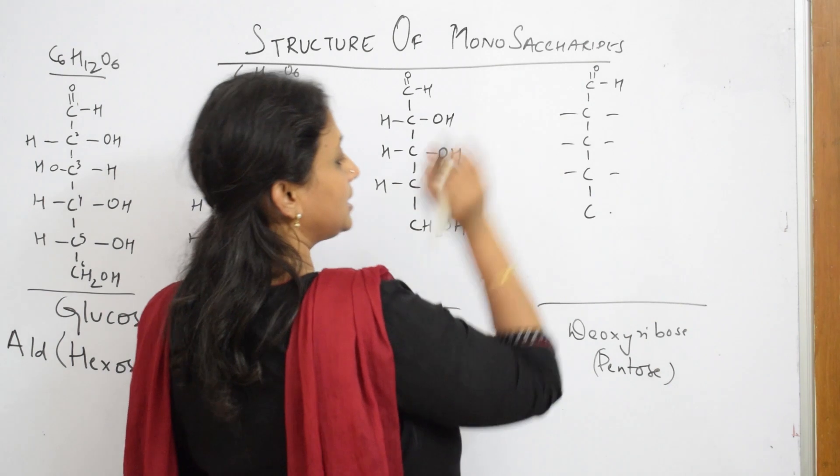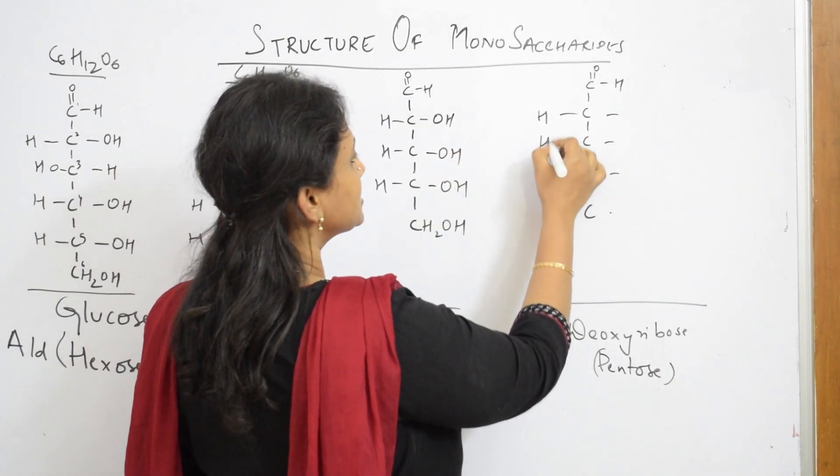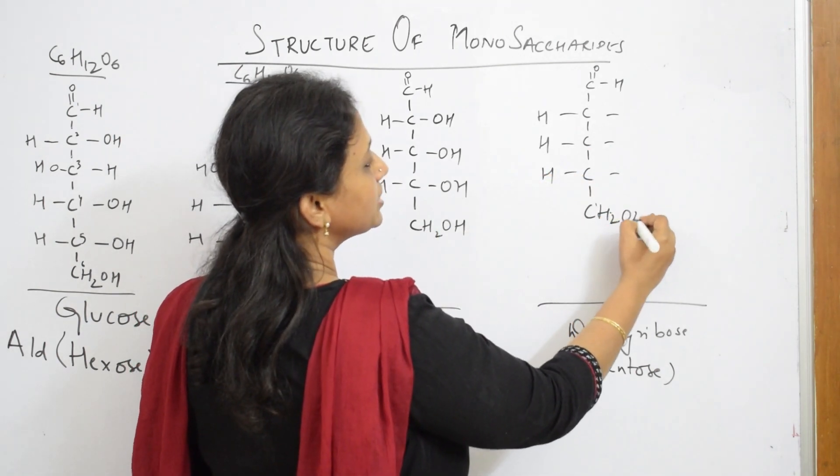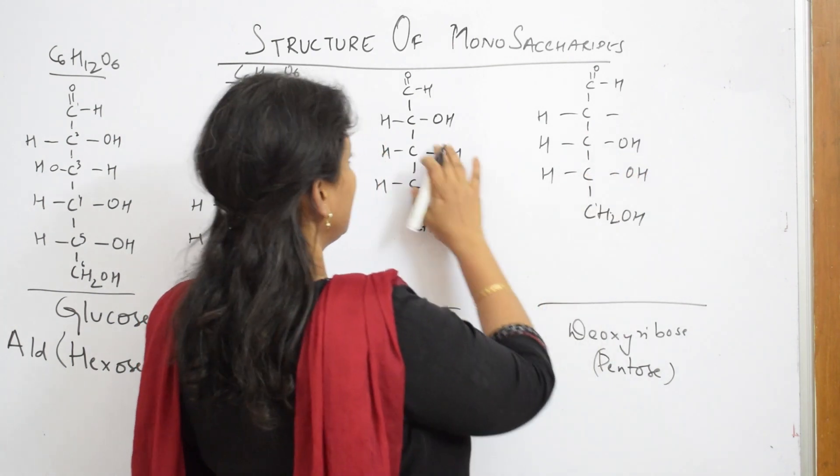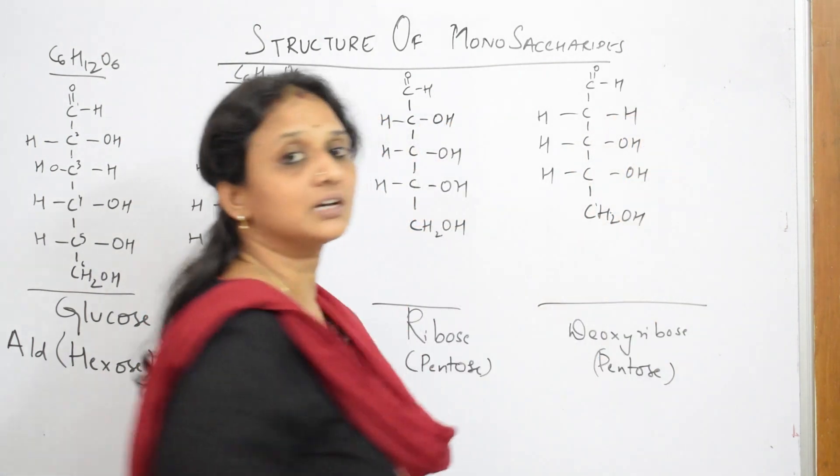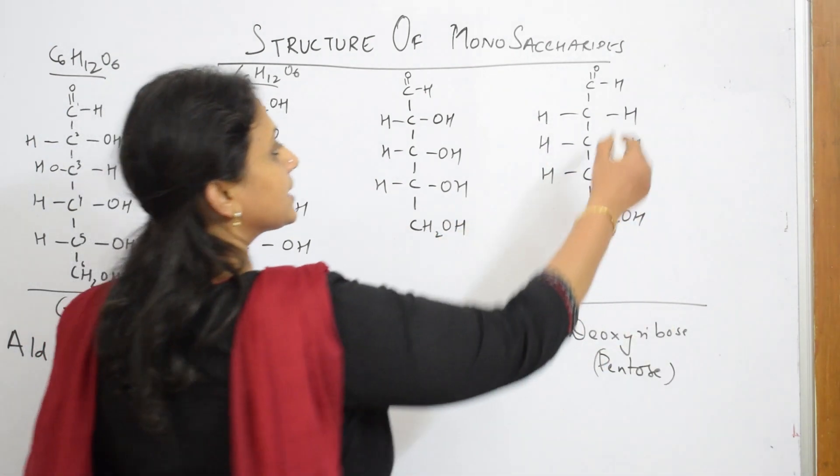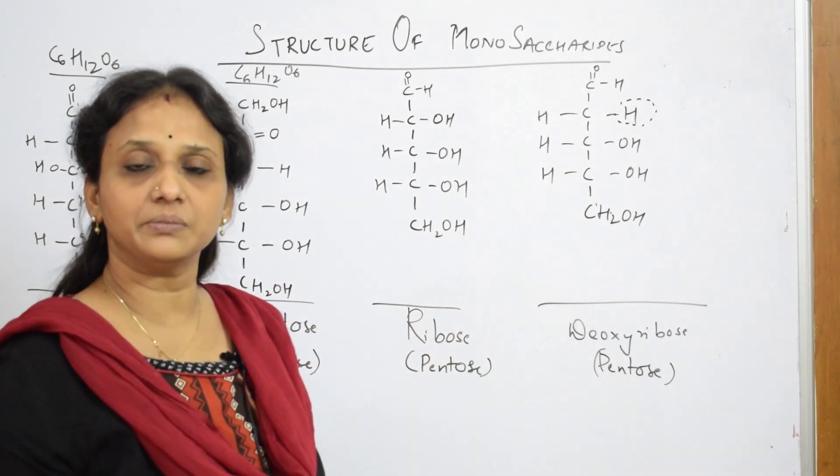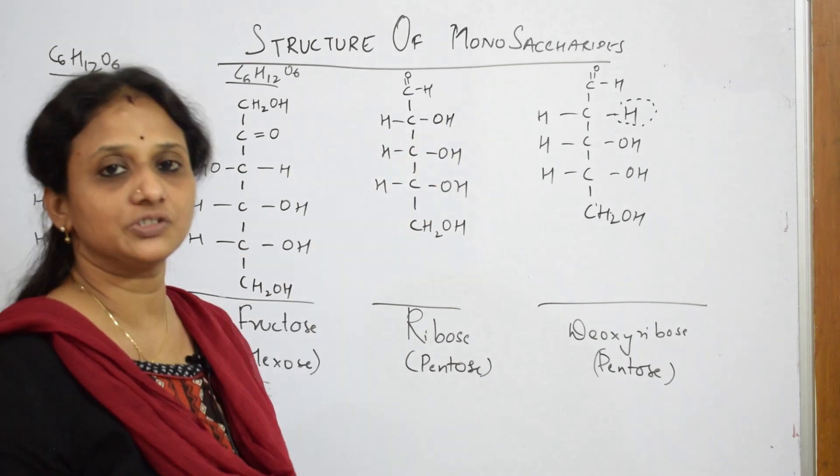Let us come to deoxyribose. In deoxyribose, all these are similar. Hydrogen atoms, this also is similar. CH2OH, similar. But here, most important, in the second carbon, there is no oxygen. That is why it is called deoxyribose. Once again, in the second carbon, there is no oxygen beside hydrogen. This is missing in deoxyribose. But in ribose, you have oxygen.